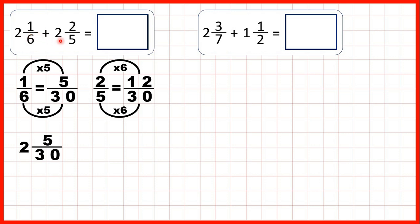And instead of adding 2 and 2 fifths, we can add 2 and 12 thirtieths because that's equivalent to 2 fifths. Now when we're adding mixed numbers, we start by adding the fractions. So we have 5 thirtieths plus 12 thirtieths.